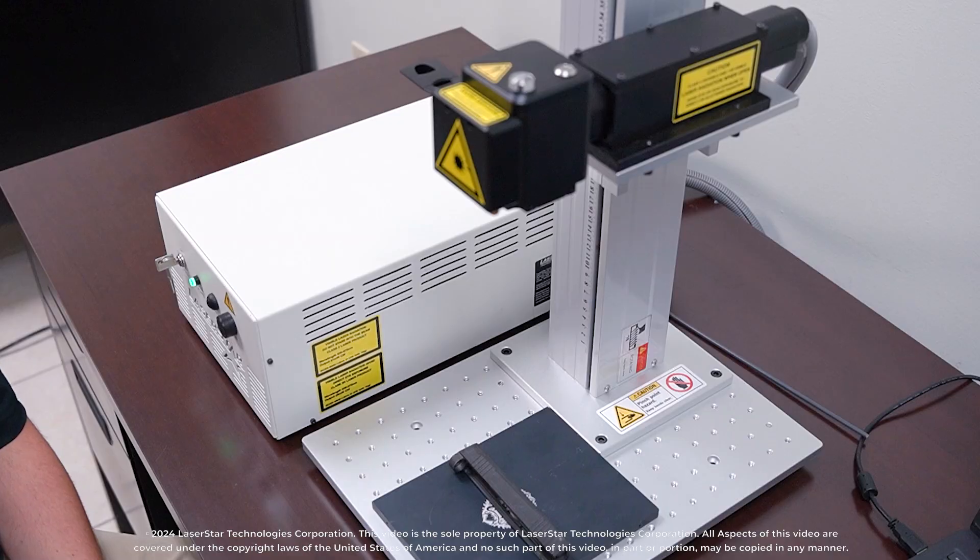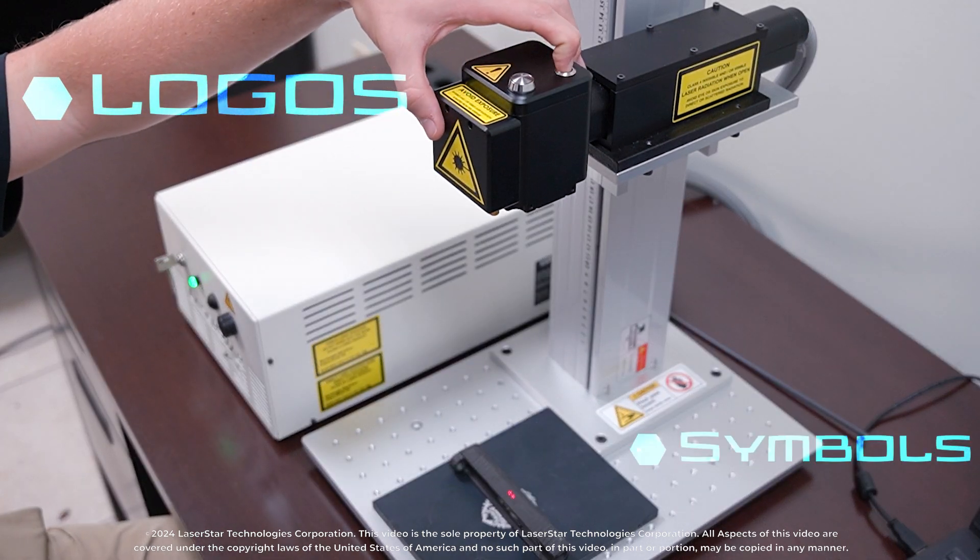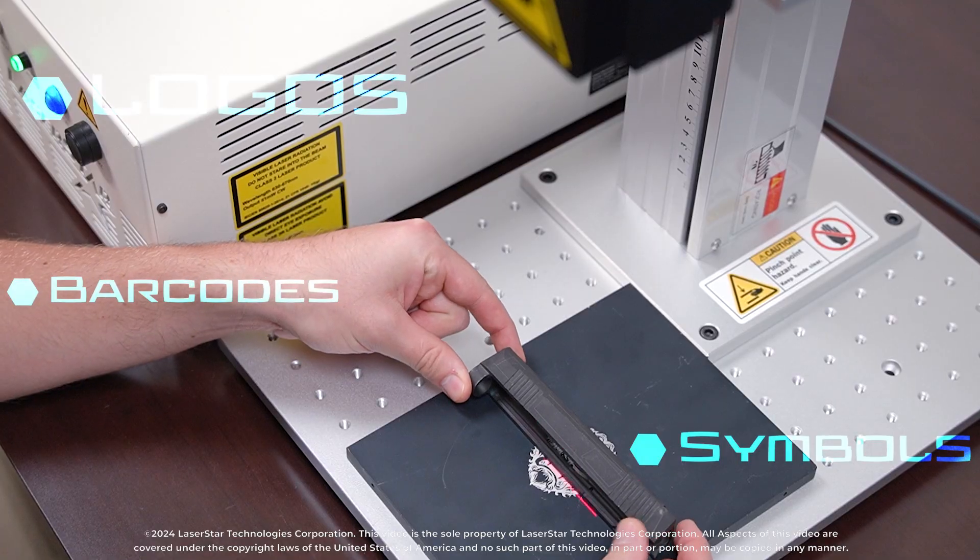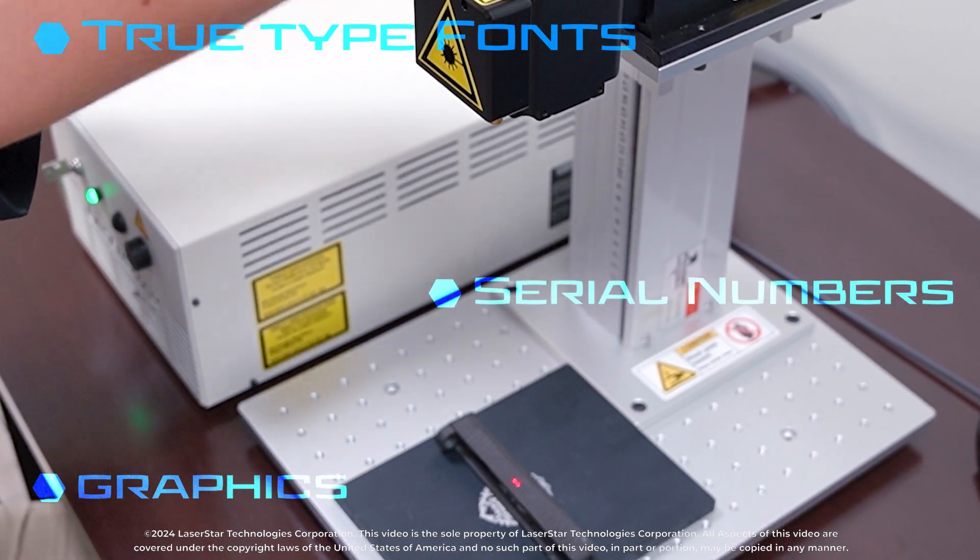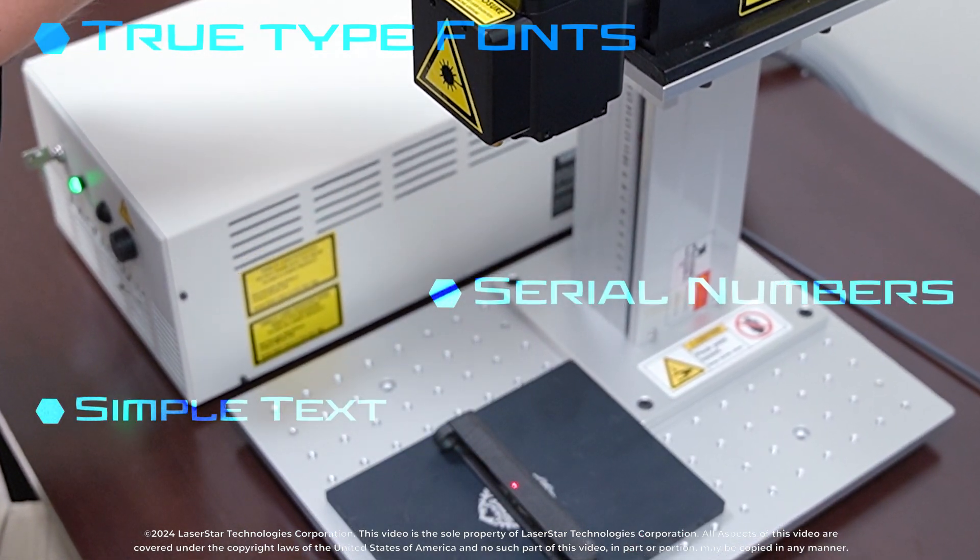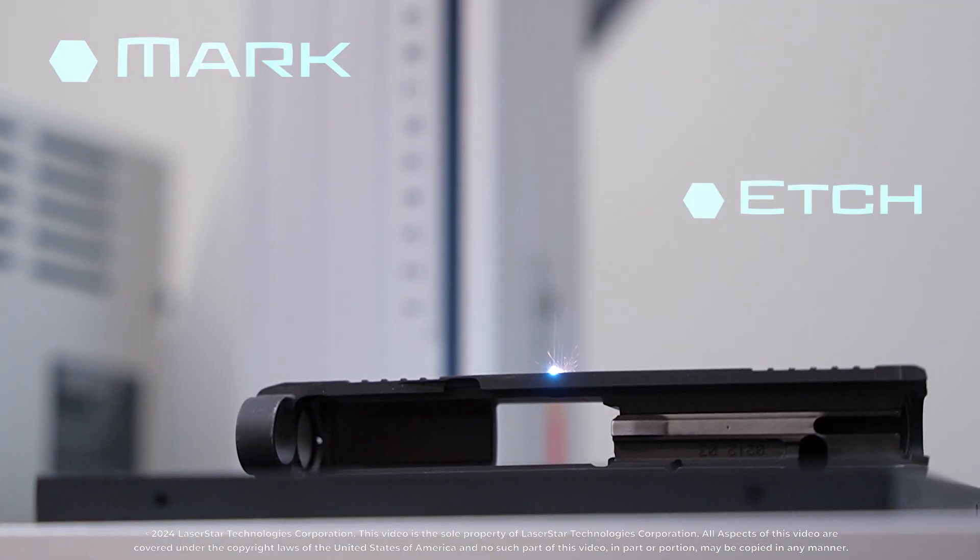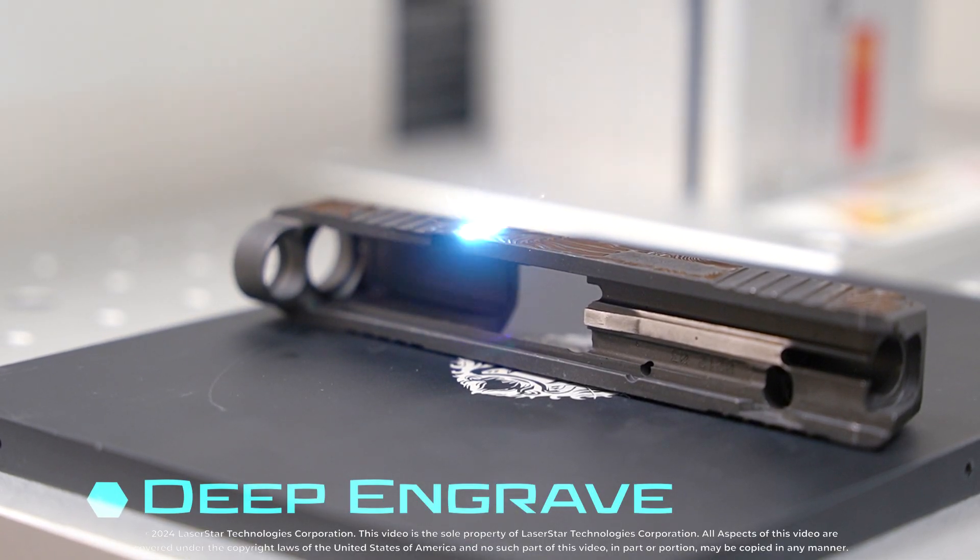The 3201 can mark logos, symbols, barcodes, 2D matrix, graphics, true type fonts, serial numbers, simple text, and can mark, etch, or deep engrave on flat or cylindrical surfaces.